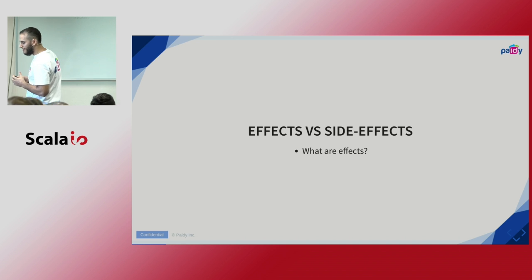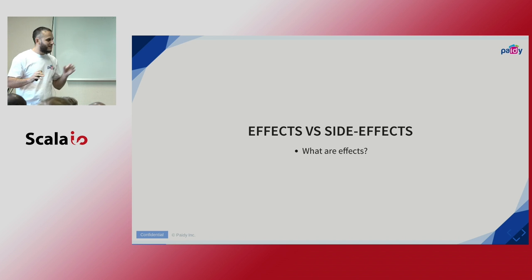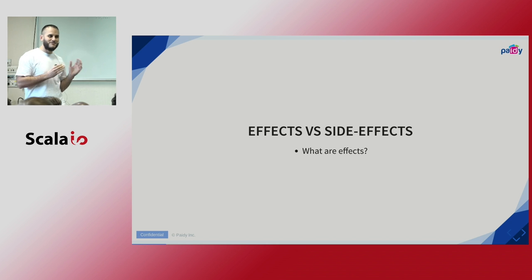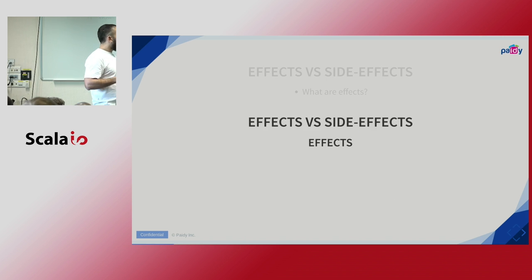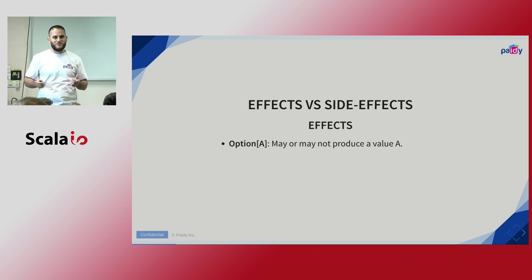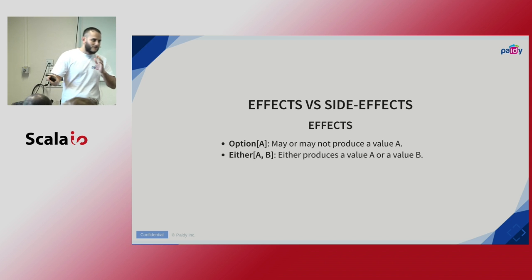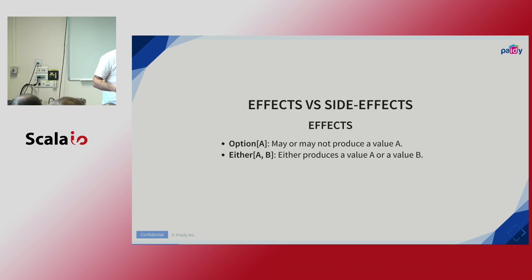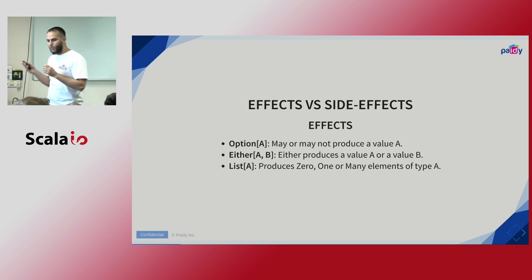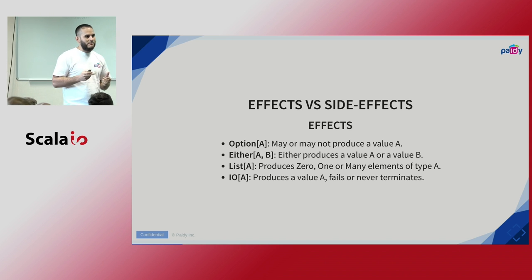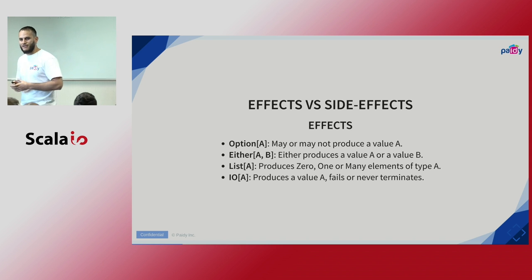So let's get started — what are effects? Option is an effect that may or may not produce a value of type A. Either is another effect that can produce a value of type A or type B. List can produce zero, one, or many elements of type A. And Cats Effect IO produces a value of type A, fails, or never terminates. These are effects — we can reason about them and assign them to a variable as a value.